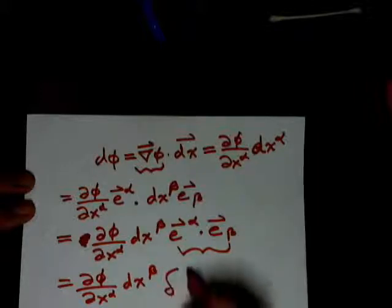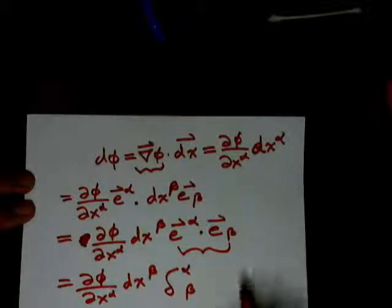and the Kronecker delta α_β. This is going to kill all the terms that are not equal to α, so this dx^β becomes dx^α.